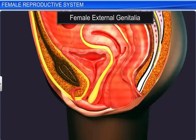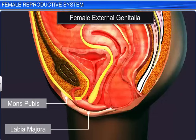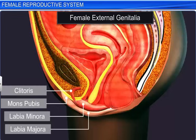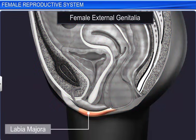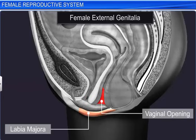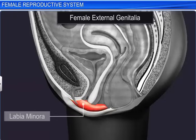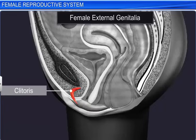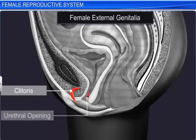The female external genitalia includes the mons pubis, labia majora, labia minora, and the clitoris. The labia majora consists of fleshy folds of tissue that extends down from the mons pubis and surrounds the vaginal opening. Hidden under the labia majora is the labia minora. Towards its upper end lies the clitoris, a small finger-like structure, and below it is the urethral opening.